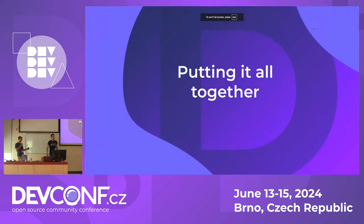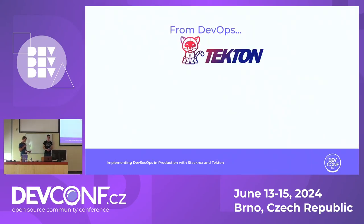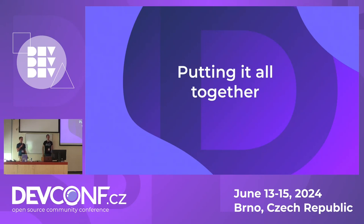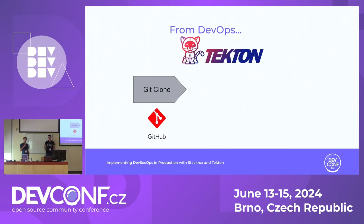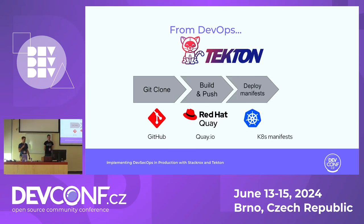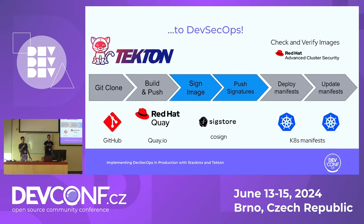After introducing all the single components useful for a DevSecOps process, we will put it all together in a complete pipeline — because it's not feasible that all images are signed by a specific person on their own laptop. So we will have a repeatable process. We will create a Tekton pipeline that will first check out the repository, build and push the image to the Quay registry, deploy the manifests to the Kubernetes cluster, and then implement the DevSecOps steps — signing the image and pushing the signature to the Quay registry.